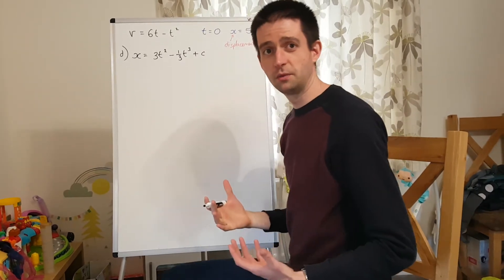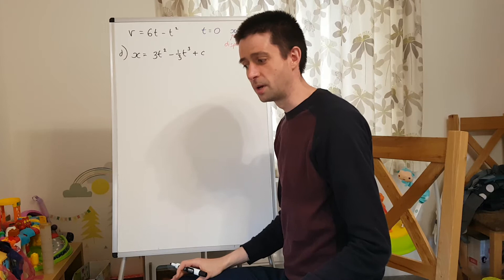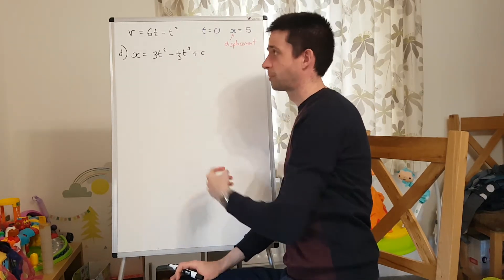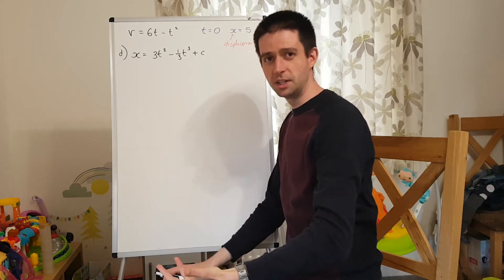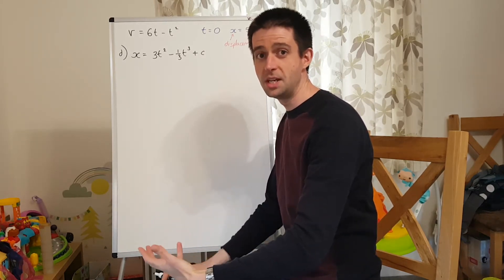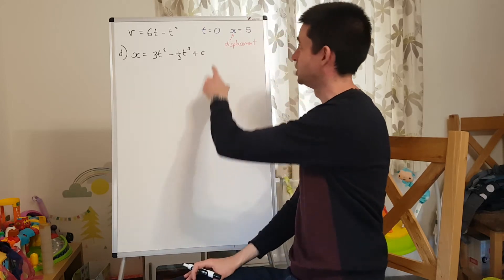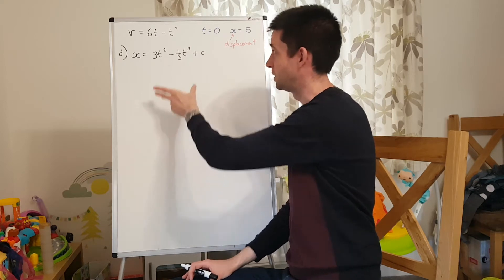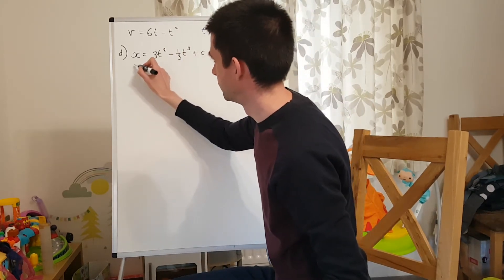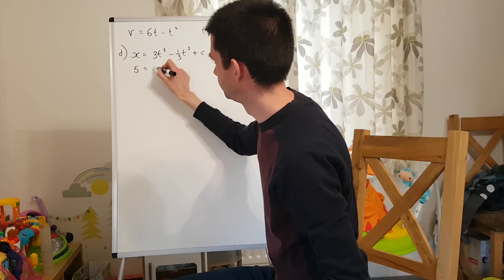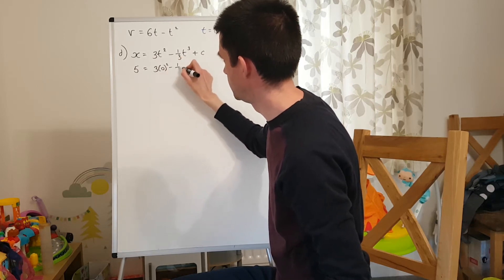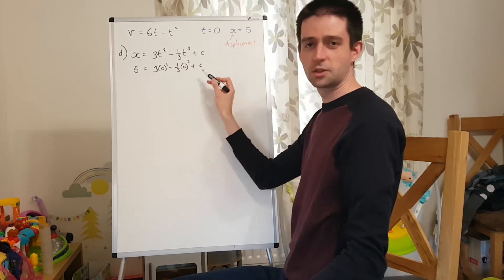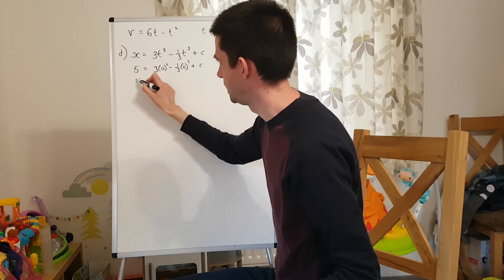For an expression for the displacement of the particle from the origin O, we need to find out what this value of c is. We read the question that tells us that at time 0, it's 5 metres from a fixed origin O. So when t is 0, x is 5. I wrote that down at the very start of the question. Now I'm going to use that information. I'm going to make x equal 5 and sub in 0 for t. And you can see that's quite nice. That's just going to come out that c equals 5.